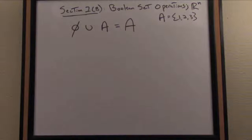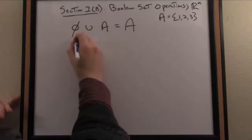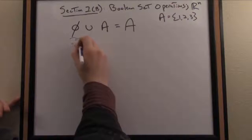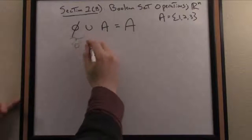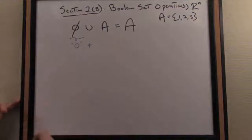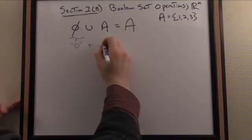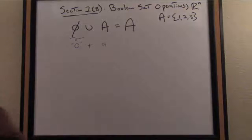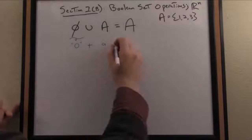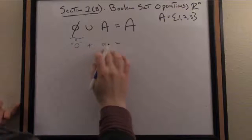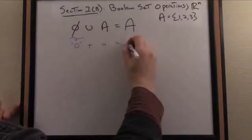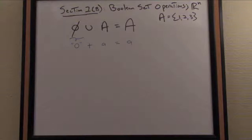I want to point out the parallel here with the number zero. The empty set is operating like a zero. Let's think of the union as a plus, and A as any real number. When I add zero to any number, any real number a, I get that number back.